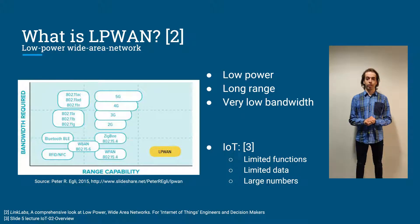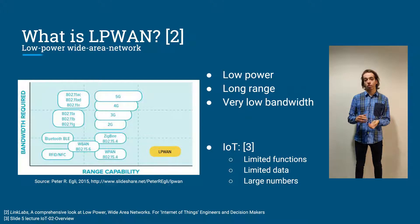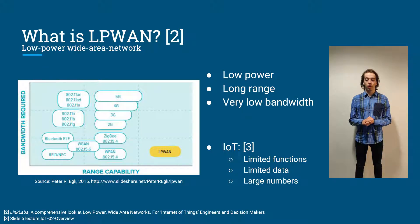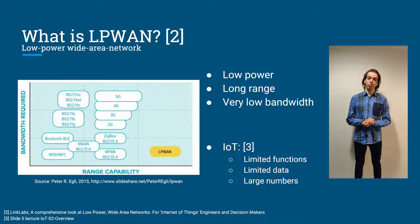If you look at the figure, you can see its range is much larger than for example Wi-Fi, 4G, or 5G, but its bandwidth is even smaller than Bluetooth.